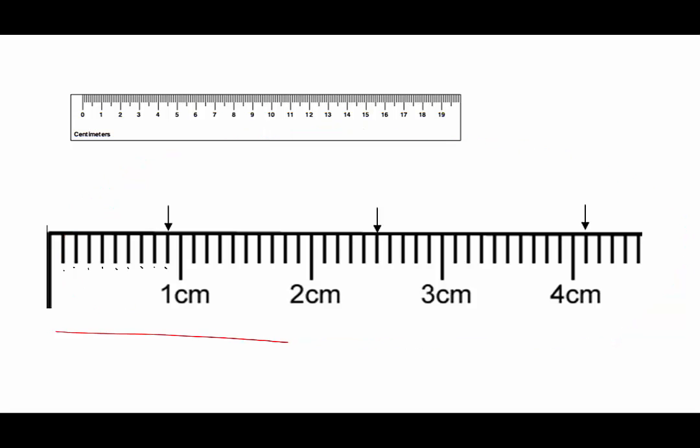Each centimeter is broken down into 10 parts, which means each one is one-tenth, and one-tenth as a fraction is the same as point one as a decimal. So if this is one-tenth, then this is nine-tenths.